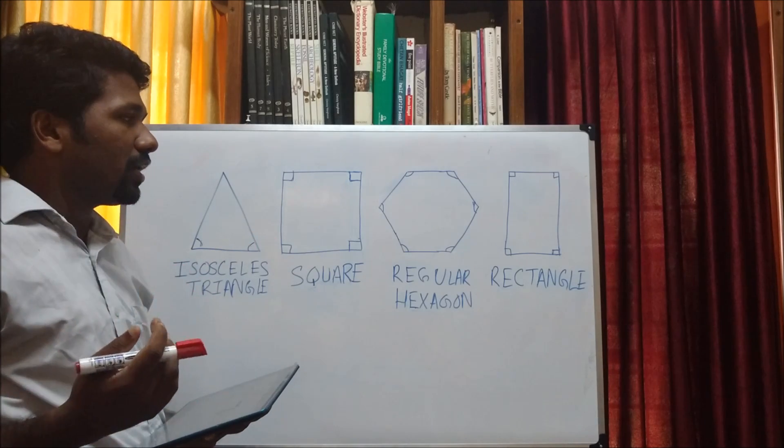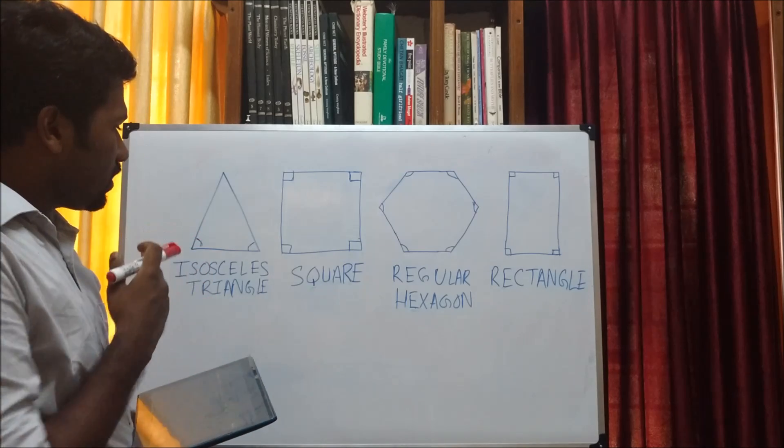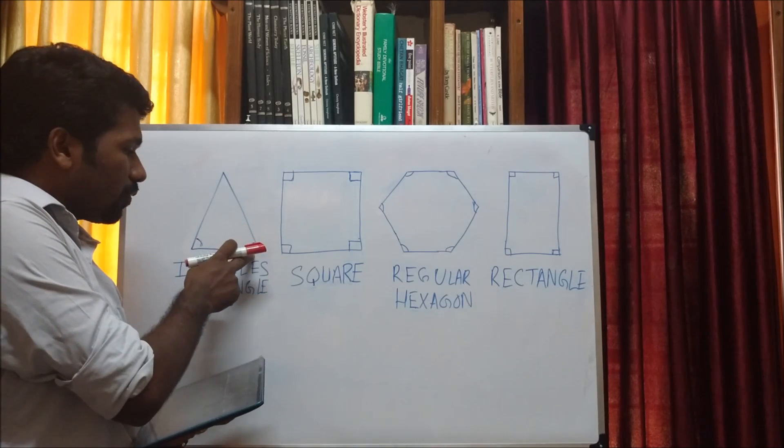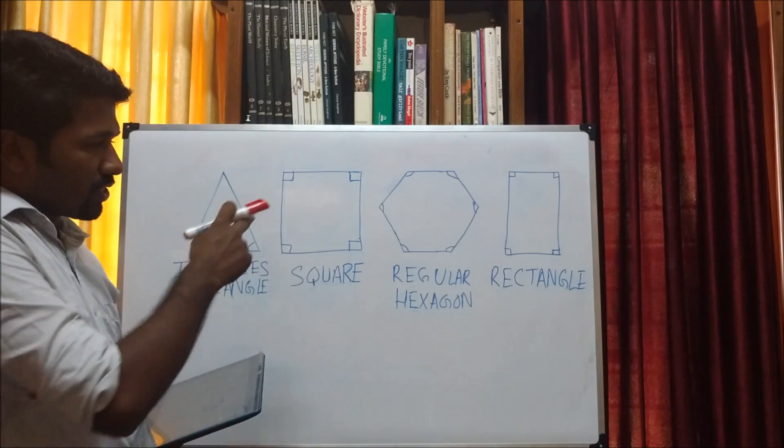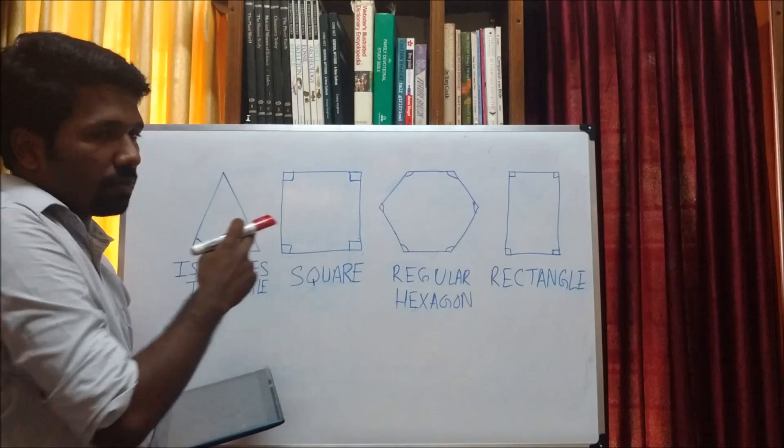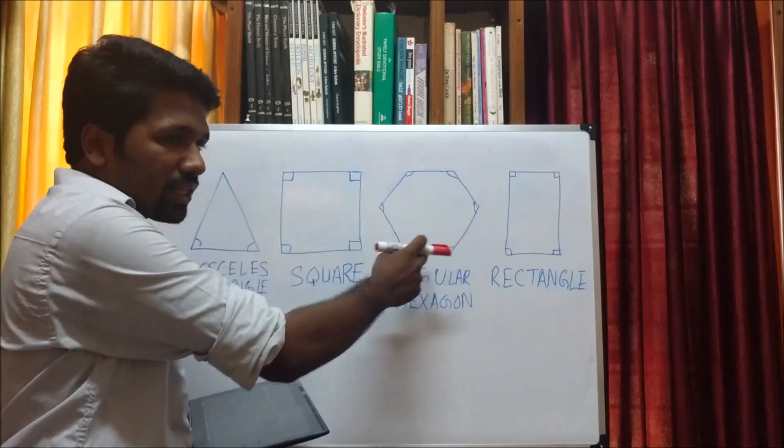So let us try with the interior angles of the shapes. For an isosceles triangle, two of its angles will be equal but the third angle will be different from the other two angles. For a square, all of its angles will be equal. Again, for a regular hexagon, all six angles will be equal.